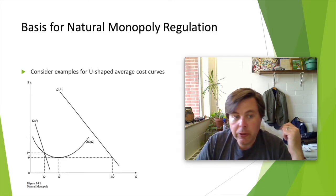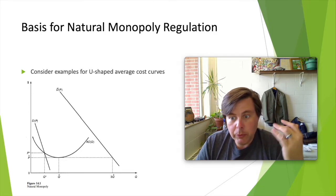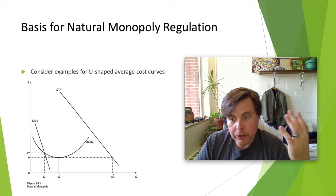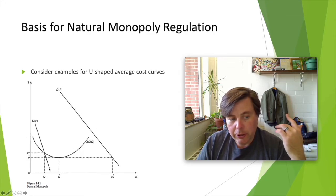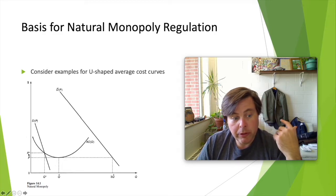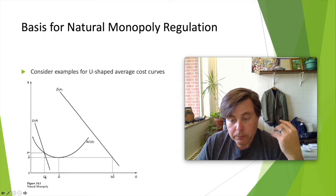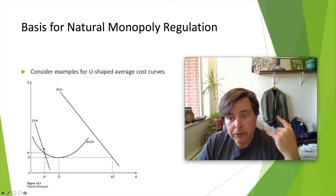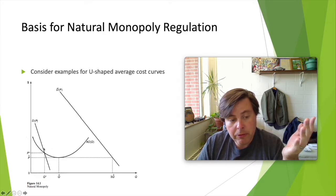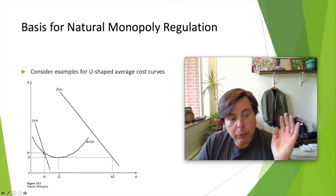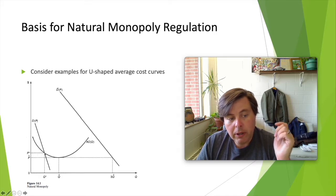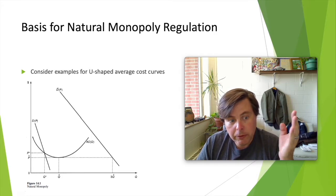Now over here to the left, you'll recognize some of our usual stuff: an average cost function, and here we have a demand function D of P, that's producing some P star and Q star. We'll immediately recognize this as a natural monopoly situation because the entire market demand is captured by one firm.